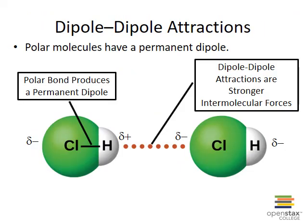In polar molecules, the position of strongly electronegative atoms produces permanent dipoles. In the hydrogen chloride molecules depicted here, electrons are drawn more strongly to the chlorine atom because of its higher electronegativity. The permanent nature of this dipole results in a stronger intermolecular attraction.